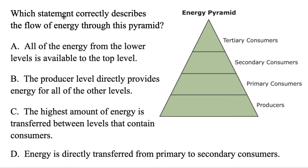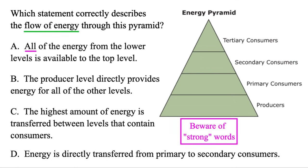Which statement correctly describes the flow of energy through this pyramid? The assumption is that energy starts with producers, which are plants, and gets passed on to animals, which are consumers. The first option: all the energy from the lower levels is available to the top. Beware of that strong word 'all' — the energy goes from the bottom to the top and it's shrinking, so it's definitely not all available to things up top. That one's not true.